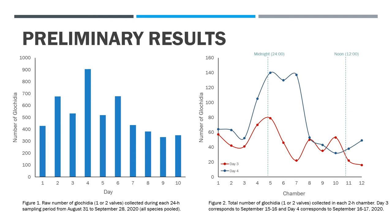The preliminary results are displayed in these two graphs. Figure 1 displays the raw number of glochidia — including one or two valves — during each 24-hour sampling period, with the highest number of glochidia collected on day 4. Please note that the data in both graphs have not been corrected for flow rate or the concentration of glochidia, and all species are pooled. In Figure 2, the total number of glochidia in each chamber during days 3 and 4 are displayed, with a higher number of glochidia around midnight and at dawn and dusk in both days.